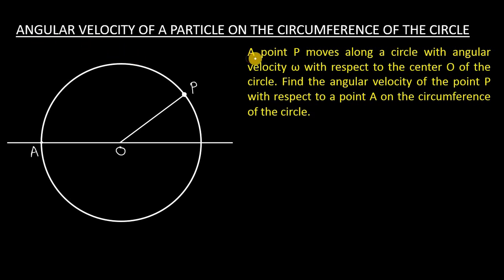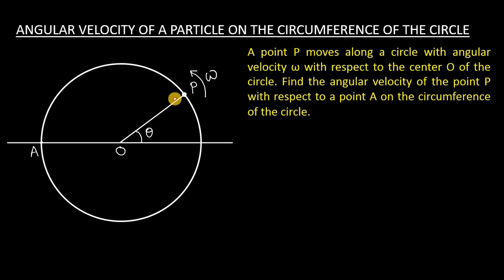In this question, a point P — basically a particle — moves along a circle with angular velocity omega with respect to the center O of the circle. The radius vector OP makes angle theta with respect to the center, and OP rotates with angular velocity omega. This means omega is equal to dθ/dt — the rate of change of angle theta is equal to the angular velocity.